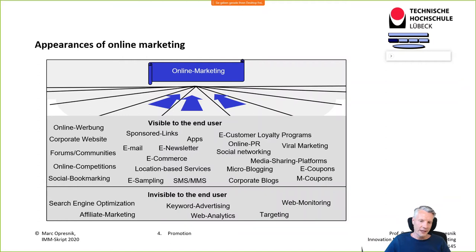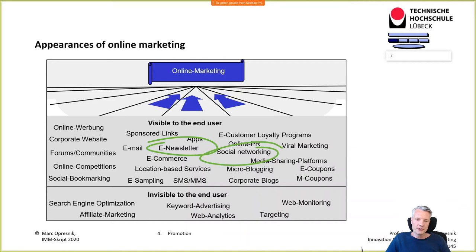There are several kinds of platforms you may use. Some platforms are visible to the end user, such as e-newsletters or social networks, but some are invisible to the end user — for example, search engine optimization. We also have very modern ways of online marketing.